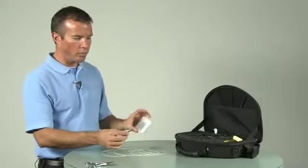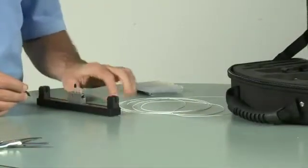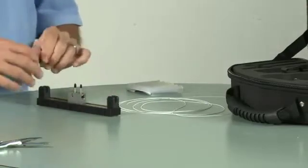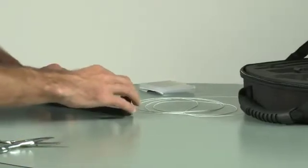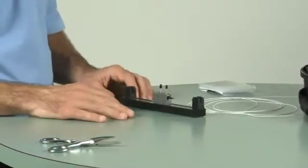The first step is to remove the splice from the packaging and insert it into the installation fixture. This is simply done by leading the splice into place until it stops in position.